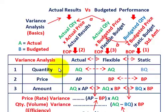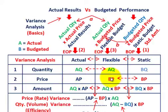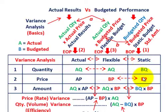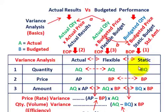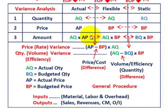For our actual amount, it's taking actual quantity (AQ) times actual price (AP). For our flexible budget, we take actual quantity (AQ) times budgeted price (BP). For the static budget, it's budgeted quantity (BQ) times budgeted price (BP). The flexible budget takes its quantity from actual results and its price from the static budget.